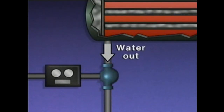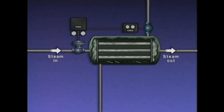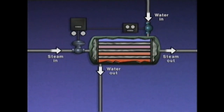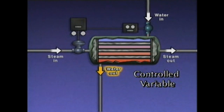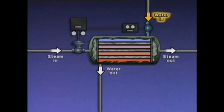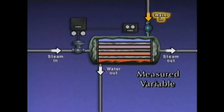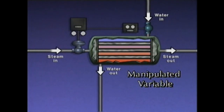The control valve responds by closing to reduce the amount of steam flow to the heater. As a result, less heat transfer takes place, and the outlet water temperature returns to set point. A feed-forward control system attempts to correct for a process disturbance before the controlled variable deviates from set point. In this feed-forward heat exchange system, steam flows through tubes inside a heater and heats water flowing around the tubes. The controlled variable is the outlet water temperature, the measured variable is the inlet water temperature, and the manipulated variable is the steam flow into the heater.